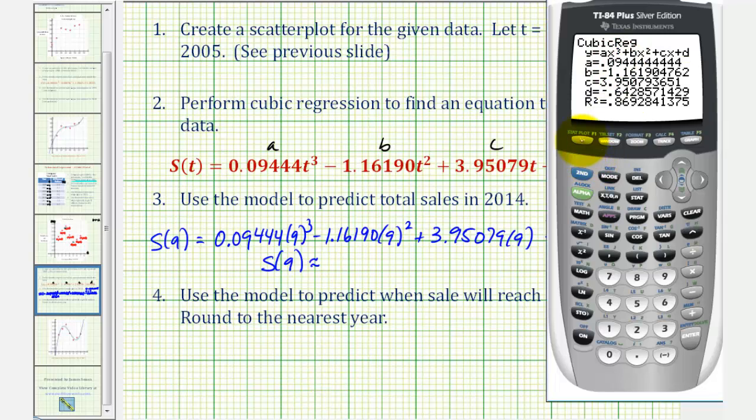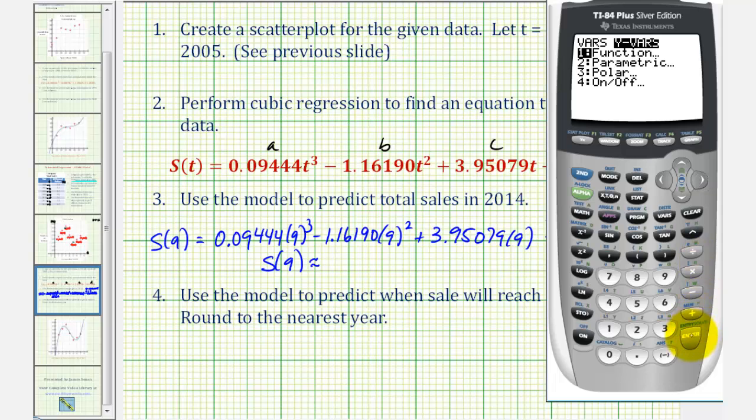Again, since the equation is already in y one, as we see here, if we go back to the home screen, we'll now select y one by pressing vars, right arrow, enter, enter, and then in parenthesis, we'll enter nine. This will evaluate the function at x equals nine, or in our case, t equals nine. So if we round this to one decimal place, or the tenths, the prediction would be approximately 9.7 million dollars.